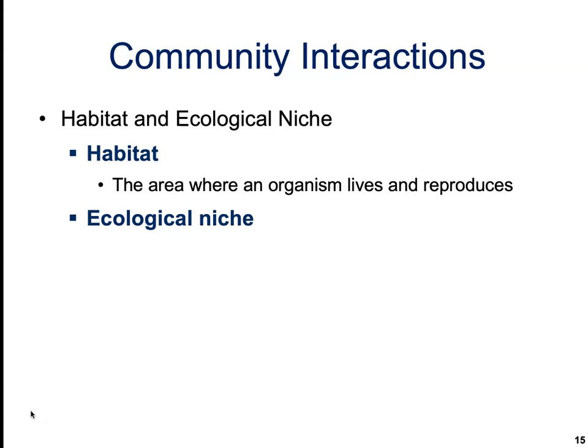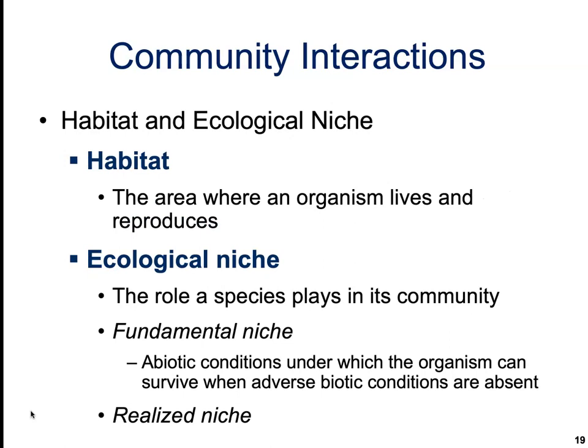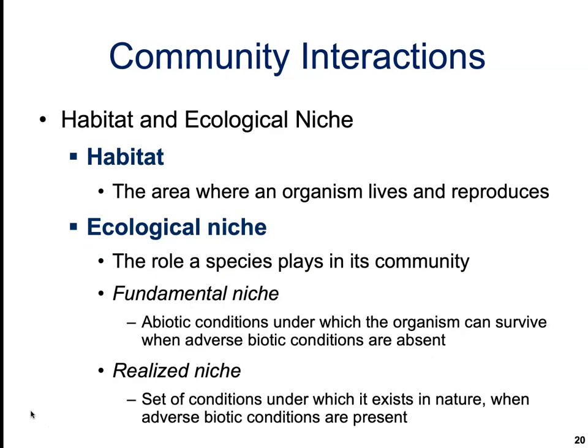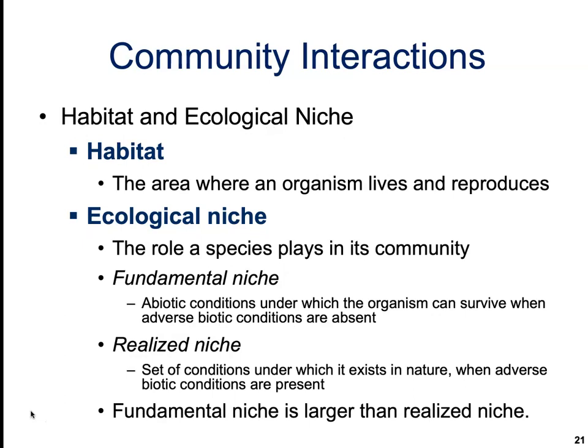Because the species niche is determined by both biotic and abiotic factors, ecologists differentiate between a fundamental niche and a realized niche. A fundamental niche is the abiotic conditions under which an organism can survive when adverse biotic conditions are absent — in other words, if there is no competition and no limitation of resources, how would that species play a role in that environment? The realized niche is the set of conditions under which it actually exists in nature, where adverse biotic conditions are present. The fundamental niche is larger than the realized niche, since the fundamental role a species could play is greater than what is actually realized.